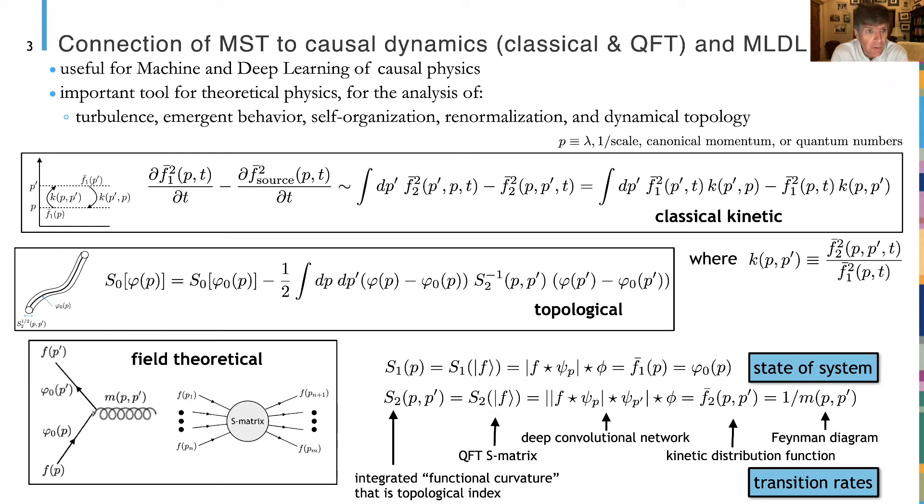Today I'm going to be talking about the Mallat scattering transformation. It was formed as a deep convolutional network where you take a signal F, convolve it with a filter bank of wave number P or scale or canonical momentum or quantum number, then rectify it with the modulus and pool it with a windowing function phi, where psi is the mother wavelet and phi is the father wavelet. You can continue this and make it a deep network by convolving with another set of wavelets of different wave numbers, then rectifying and pooling with the windowing function.